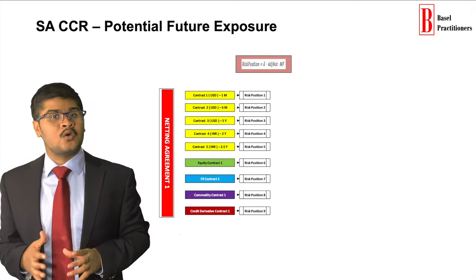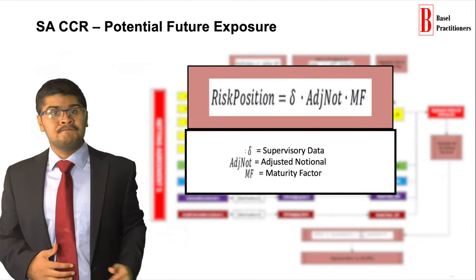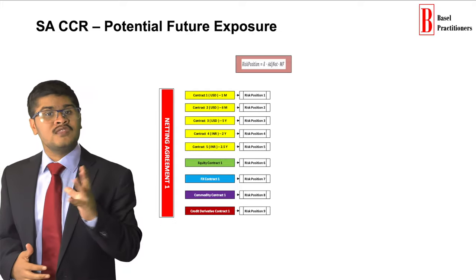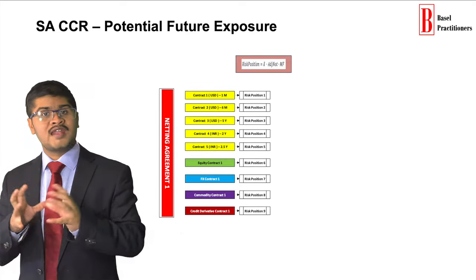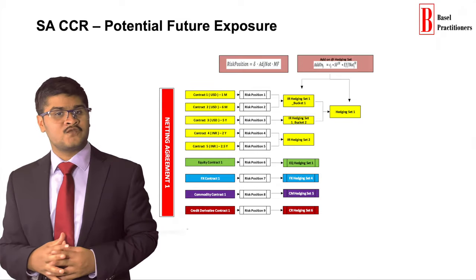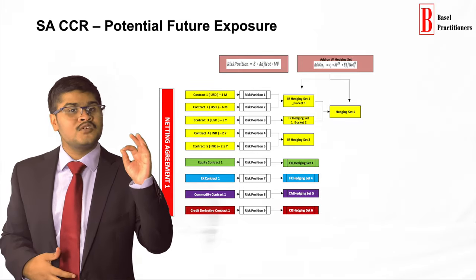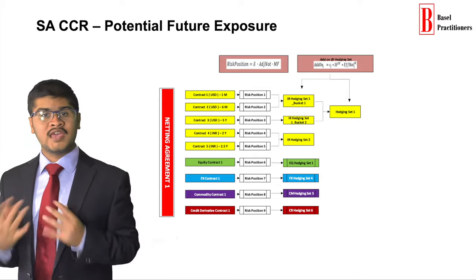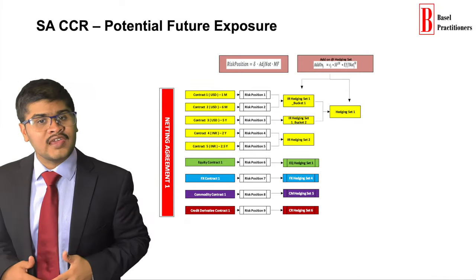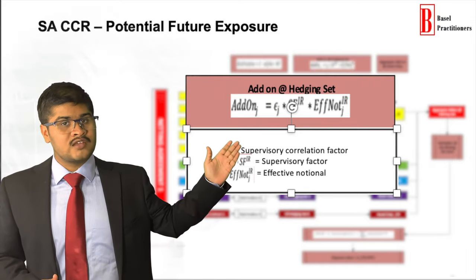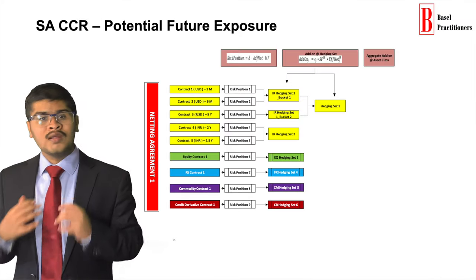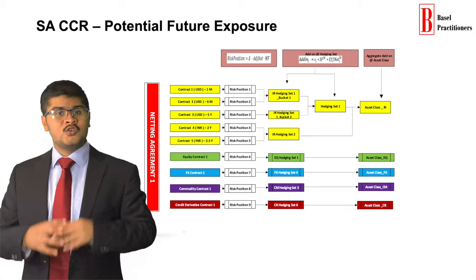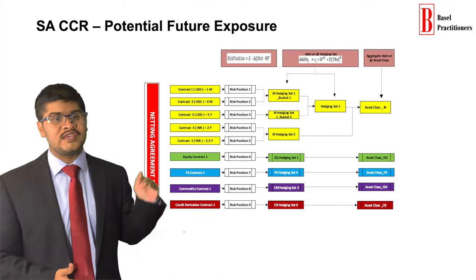To compute the risk position, we need to first compute or assign the following: supervisory delta, adjusted notional, and maturity factor. Once the risk positions are computed, the rollup starts to compute the PFE add-ons at hedging set level. The add-on is computed first at the hedging set level, but in the case of the Interest Rate asset class, it is computed first at the bucket level, then the hedging set level. To compute the add-on, we need to compute or assign: supervisory correlation factor, effective notional, and supervisory factor. Once the add-on is computed at the hedging set level, then the aggregate add-on is computed at asset class level, giving five different aggregate add-ons, one for each asset class.